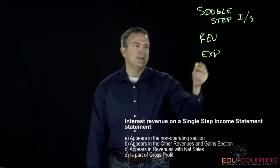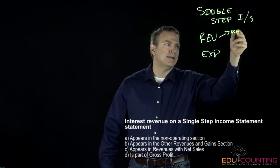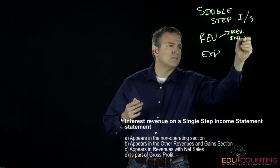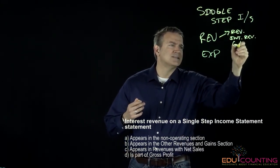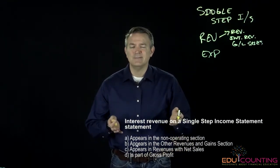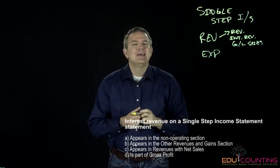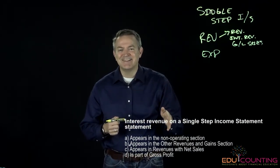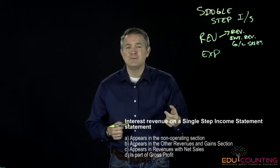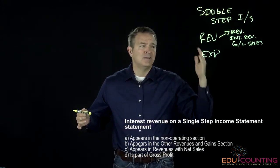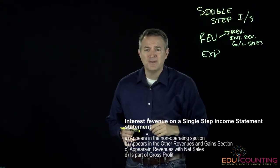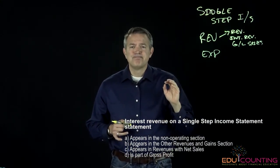What about C — does it appear in revenue with net sales? Yes. In the revenue section you've got net sales, interest revenue, gains and losses on sales of equipment — all kinds of things. I'm more of a purist and prefer revenue strictly tied to the sale of goods, but in a single-step you have to throw everything into one of two classifications. So revenue can include sales of your product, interest revenue, and gains or losses from asset sales.